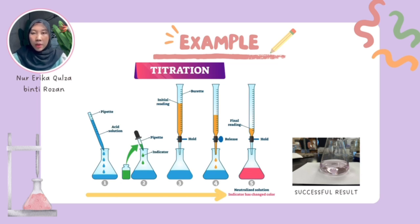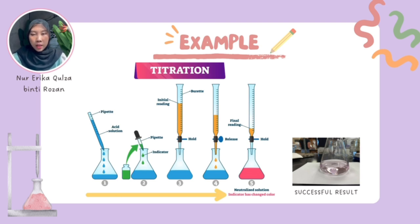We then fill a burette with the base solution of known concentration. It is important to ensure there are no air bubbles in the burette. We note the initial reading of the burette, which will be used to calculate the volume of base added during the titration. We slowly release the base solution from the burette into the acid solution while continuously swirling the flask. We need to add the base slowly, especially as we approach the endpoint, to avoid overshooting.